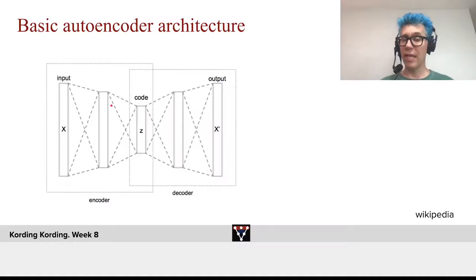When we talk about linear ones, there's little point of having multiple layers. But we basically have here an encoding into a code Z, and then we have a decoding back into X.